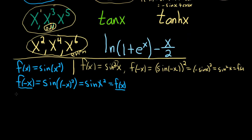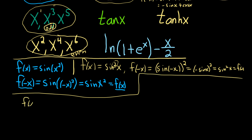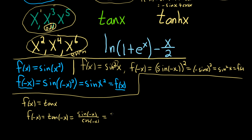Let's do tangent. f of x equals tangent of x. We start by replacing x with negative x, so f of negative x equals tangent of negative x. Tangent is sine over cosine, so this is sine of negative x over cosine of negative x. Sine is odd, so we pull out a negative in the numerator to get negative sine x. Cosine is even, so we get cosine x in the denominator. This gives negative tangent x, which is negative f of x. So f of negative x equals negative f of x for all x — tangent is odd.